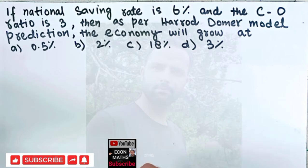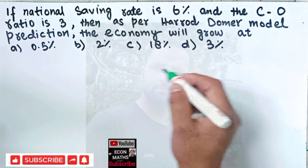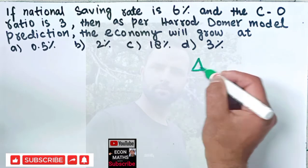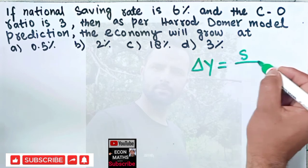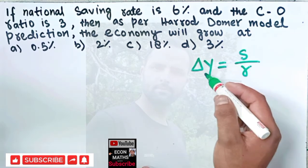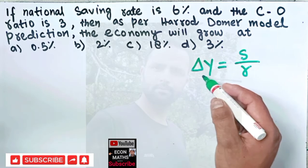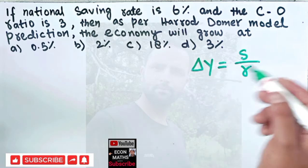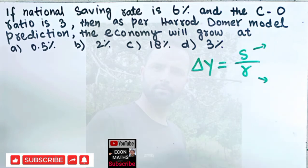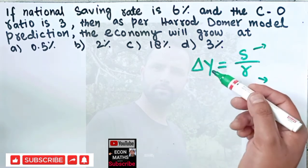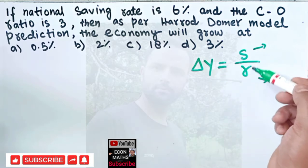The growth equation was: ΔY equals S over C-O. ΔY means change in income, S is the saving rate, and C-O is the capital output ratio. That means the economy will grow as a ratio of the savings and capital output ratio.